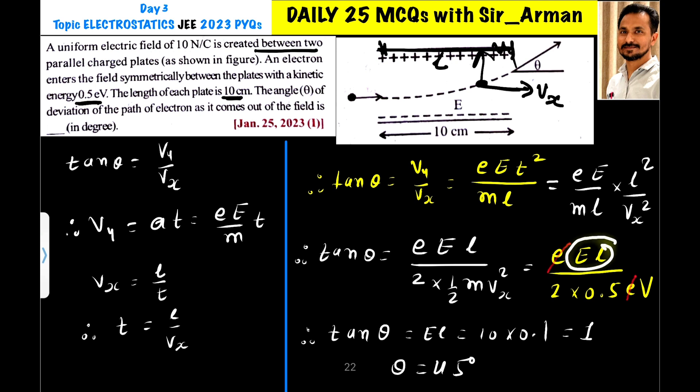So this is I have explained very long but now it becomes very simpler. So tan theta equals E into l. So E equals 10 and the value of l, the length of the plate is 10 centimeter which is 0.1. So tan theta equals 1 and that is only possible when theta is 45 degrees.